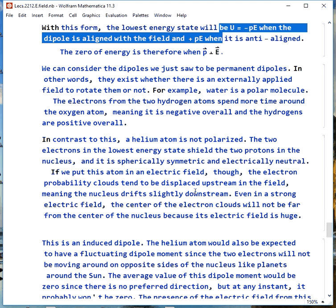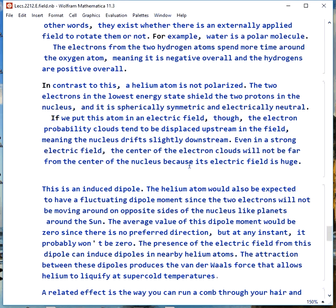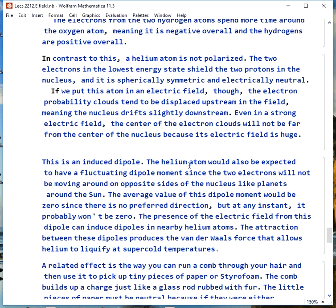Helium atom, on the other hand, is not polarized. The two electrons in the lowest energy state shield the two protons in the nucleus. It's spherically symmetric. It's electrically neutral. If we put it in an electric field, though, we tend to push the electron probability clouds upstream and the nucleus slightly downstream. Even in a strong electric field, the center of the electron clouds won't be far from the center of the nucleus because the electric field from the nucleus is huge for the electrons.